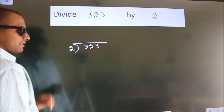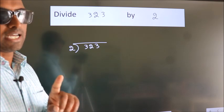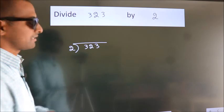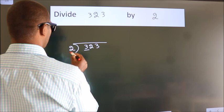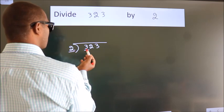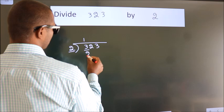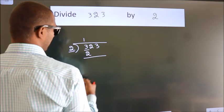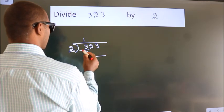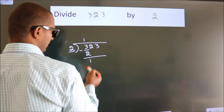This is your step 1. Next, here we have 3, here 2. A number close to 3 in 2 table is 2 ones 2. Now, we should subtract. We get 1.